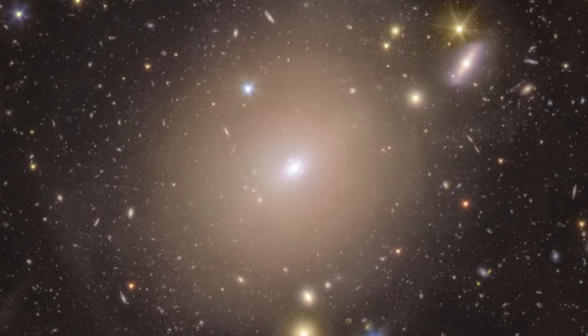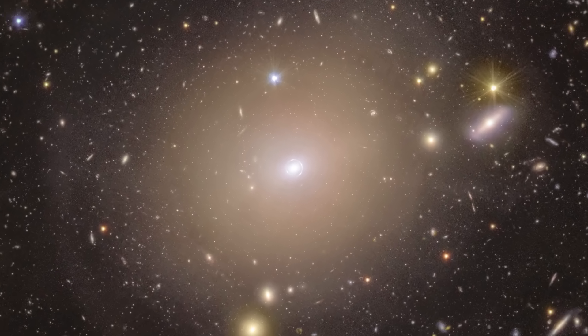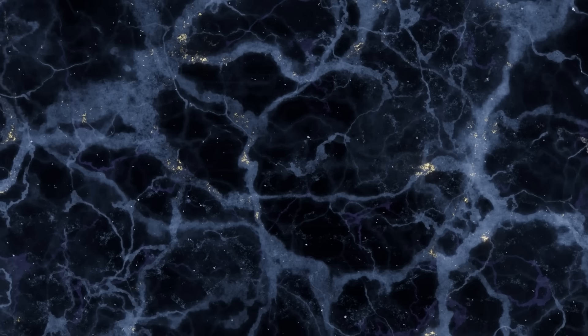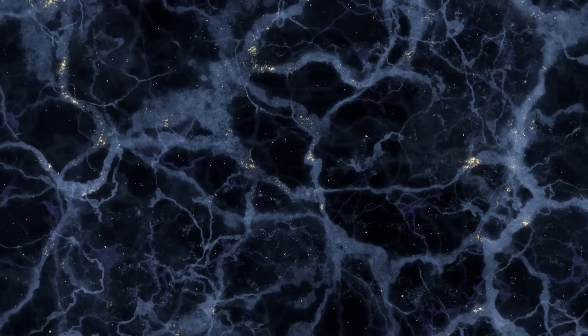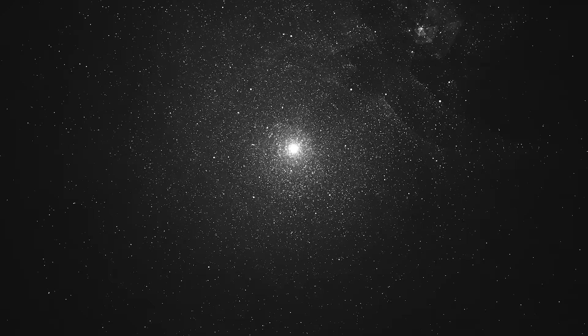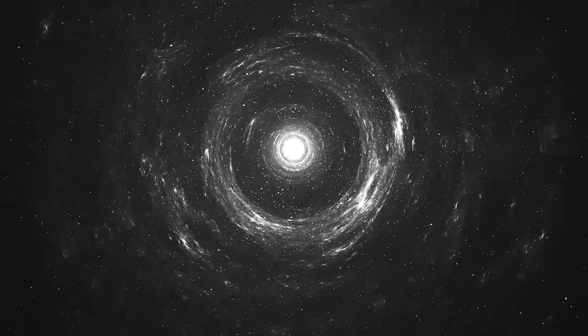So while VIS gives us sharp images of galaxies, NISP tells us how far away they are. Together, these two instruments allow Euclid to create a 3D map of the universe, helping scientists understand how cosmic structures have formed and evolved over time.